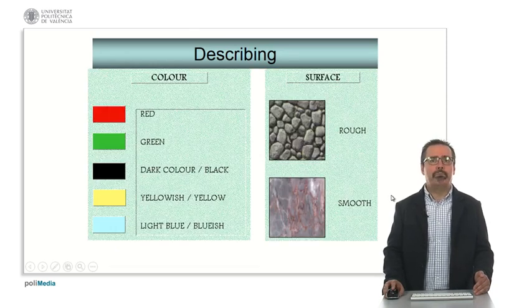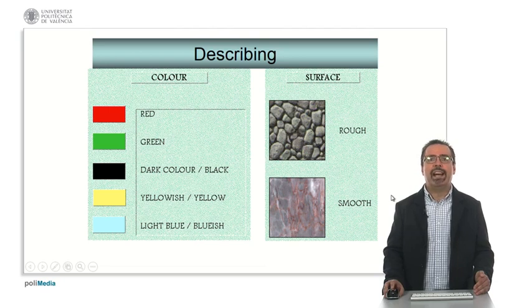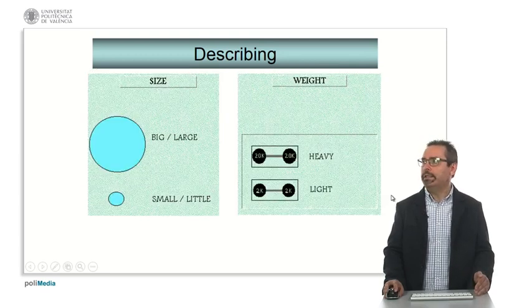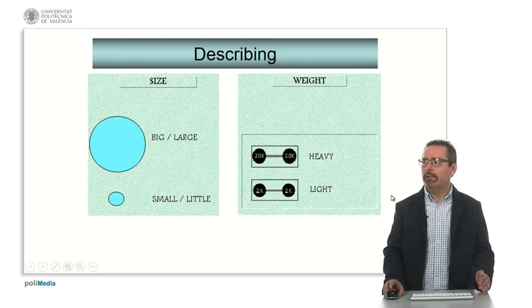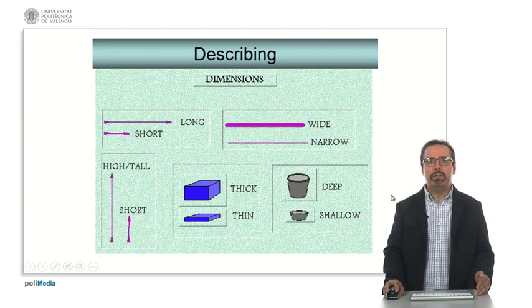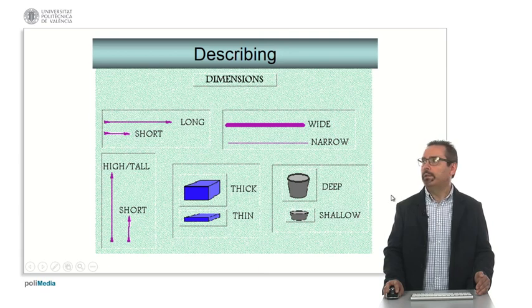We can concentrate on different possible properties or characteristics of the object, or the product, such as the color. If we don't know the color exactly, we can say it's the surface, the size. Here we have some examples to refer to size, weight. There are some other synonyms as well, but these are the most general ones. The dimensions, general dimensions, long, short, wide, narrow, high, tall, short, thick, thin, deep, shallow.